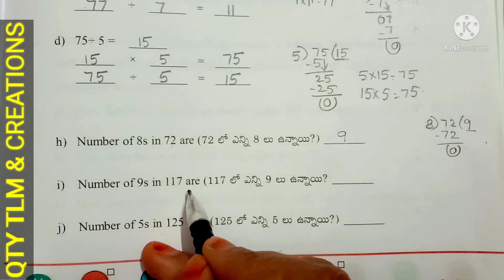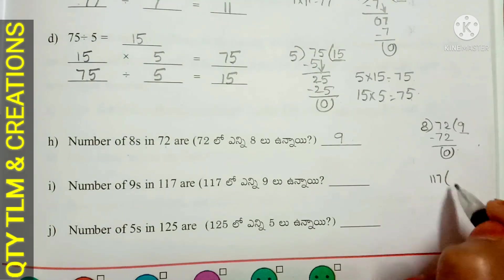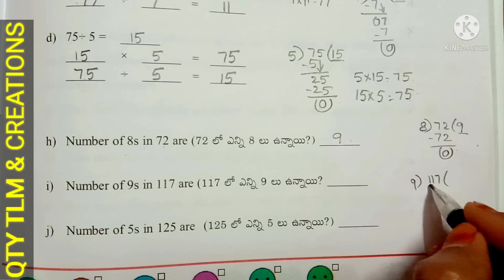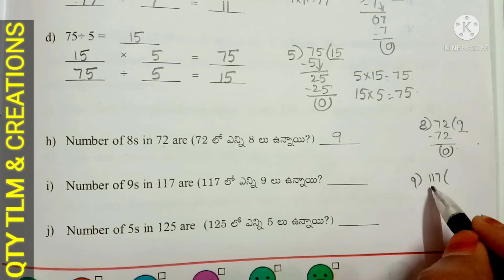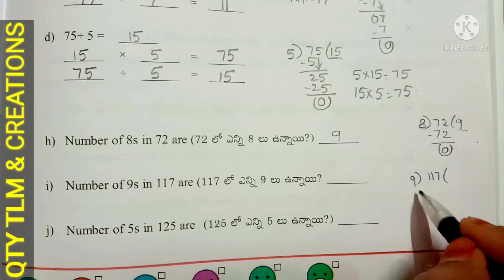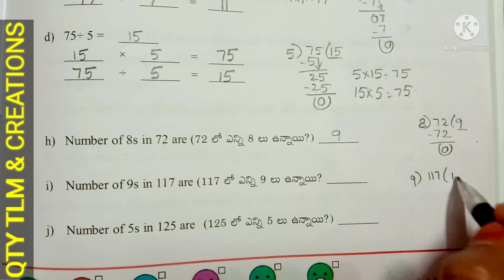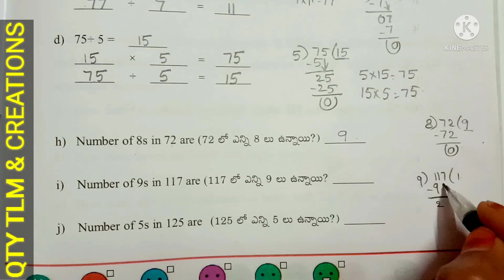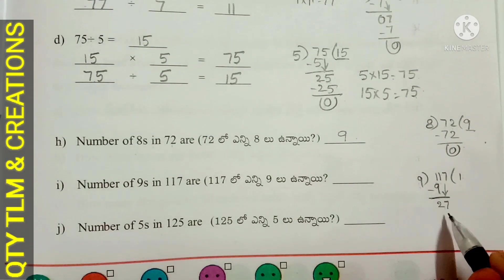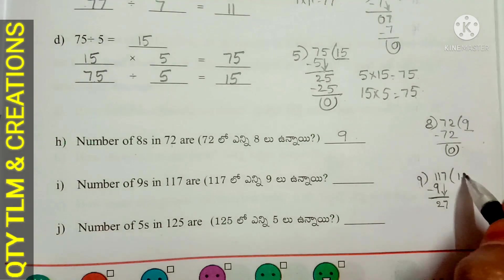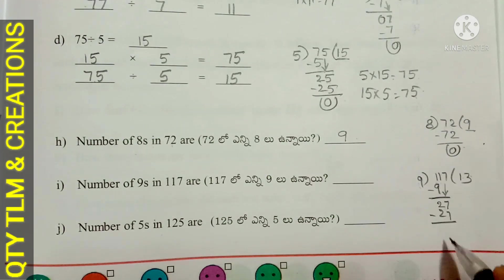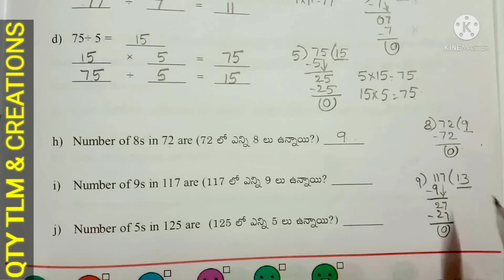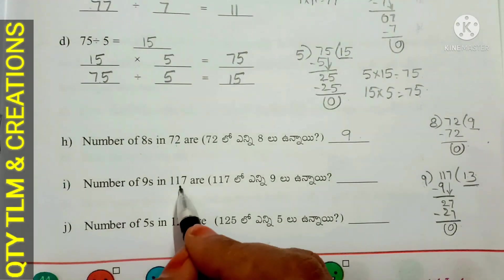Next, F. Number of 9s in 117. We take 1 from the hundreds place, but it is less than 9. So we take 1 and 1 together: 11. 9 divides 11 for 1 time; 9 ones are 9. Subtract 9 from 11, we get 2. Bring down 7: 27. 9 divides 27 for 3 times; 9 threes are 27. Subtract, remainder is 0, quotient is 13.